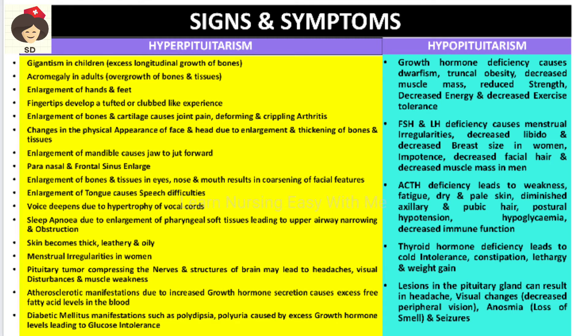In hypopituitarism: growth hormone deficiency causes dwarfism — short stature — truncal obesity, decreased muscle mass, decreased strength, decreased energy, and decreased exercise tolerance. Follicle stimulating hormone and luteinizing hormone deficiency results in menstrual irregularities, decreased sexual desire, decreased breast size in women, and in males: impotence, decreased facial hair, and decreased muscle mass.